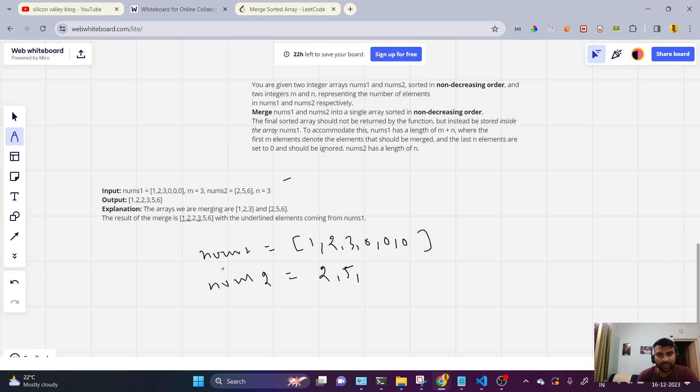nums1 that is having 1, 2, 3, 0, 0, 0, and nums2 is given that is 2, 5, and 6.